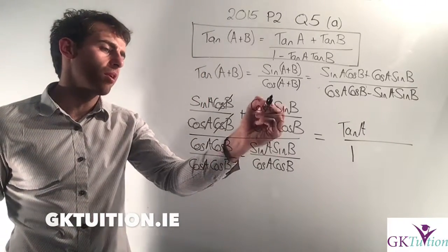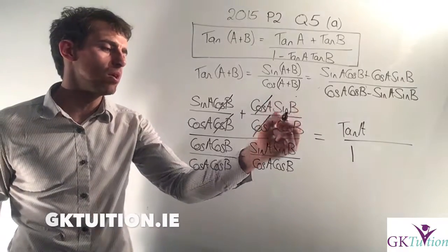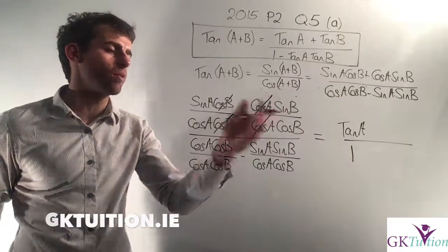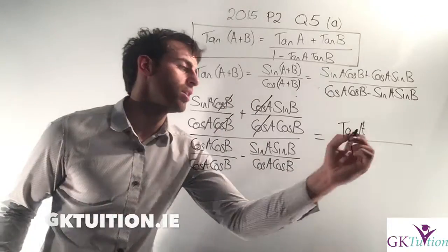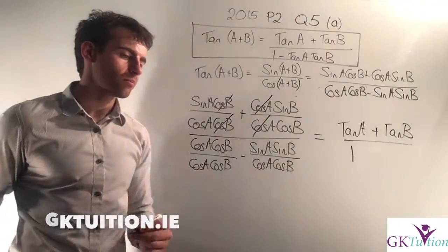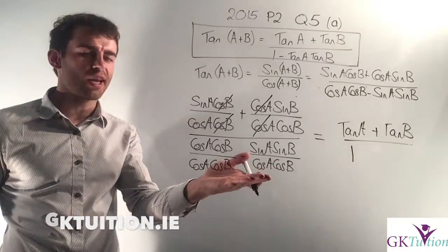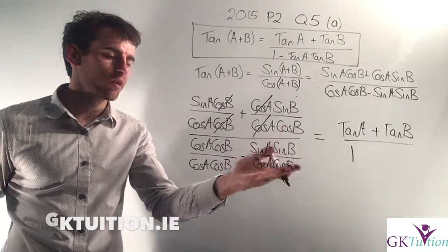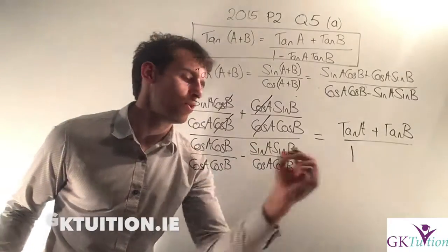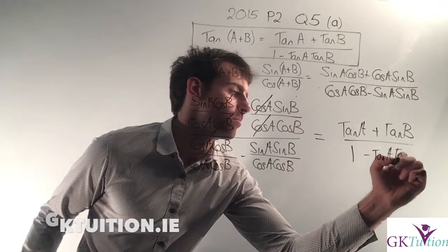For the next term here, I have a cos A on top and a cos A on the bottom, so I'm left with just sin B over cos B. From page 13 in my log tables, I know that that is just tan B. For this one, nothing cancels, but I have sin A over cos A, which is tan A, and I have sin B over cos B, which is tan B. Which means I take my minus and this just becomes tan A times tan B.